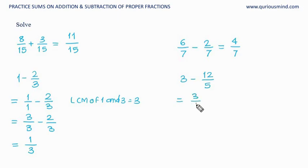Same here. 3 is 3 upon 1 minus 12 upon 5. We need to make denominator same. LCM of 1 and 5 is always 5. So here I need to make it 5. 1 into 5 is 5, so 3 into 5 is 15. 15 upon 5 minus 12 upon 5.